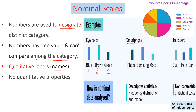Similarly, for smartphones, if iPhone is represented with 10, Samsung with 11, and Motorola with 20, we cannot compare these numbers — they are just a representation. The same is true for a transport system. For representation, we can use bar graphs or pie charts for nominal scale data. Using descriptive statistics, frequency and mode can be applied. For inferential statistics, because of the qualitative nature of nominal scales, non-parametric tests — particularly the chi-square test of independence — can be used.